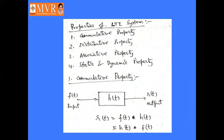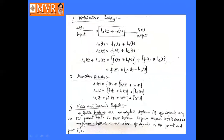For the cumulative property: the system has impulse response h(t), input f(t), and output r(t). The response r(t) is defined as f(t) convolved with h(t), written as f(t) ★ h(t), which can also be written as h(t) ★ f(t). This is called the cumulative property.